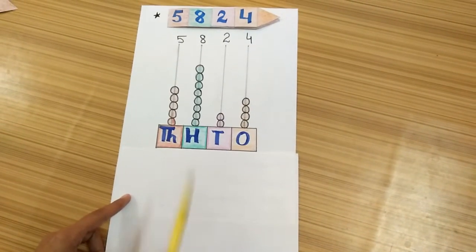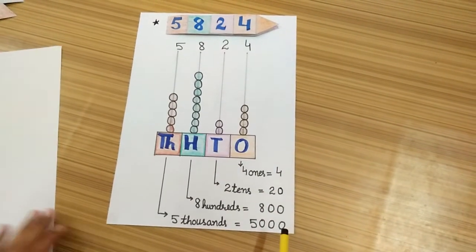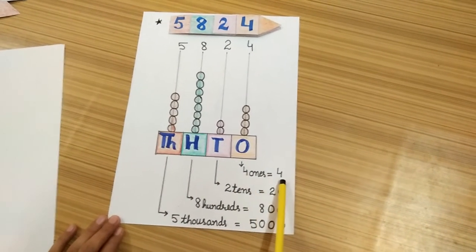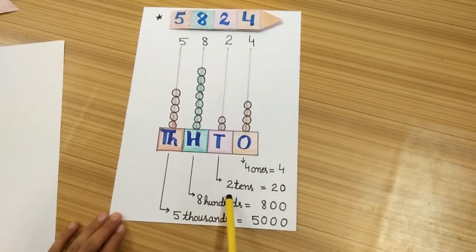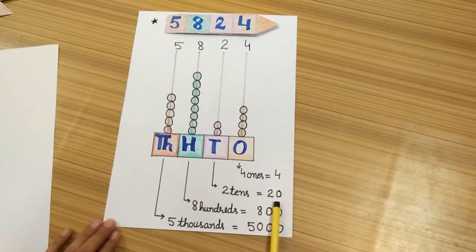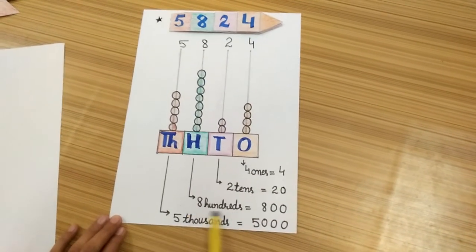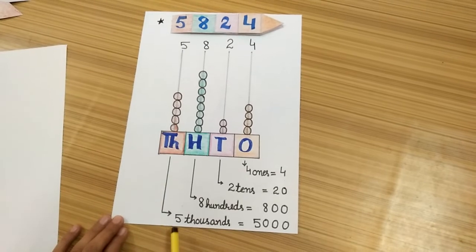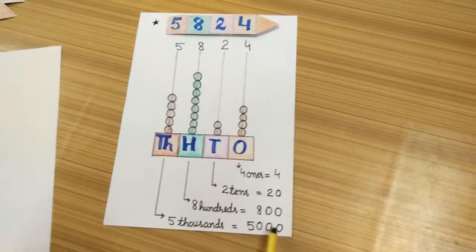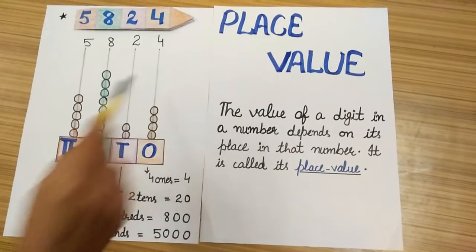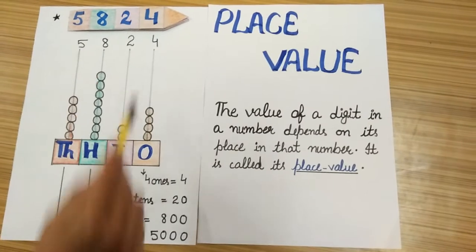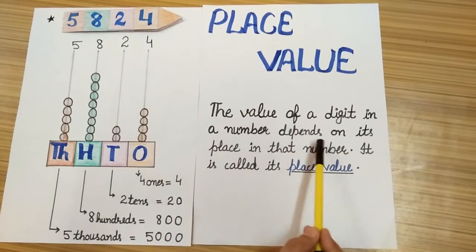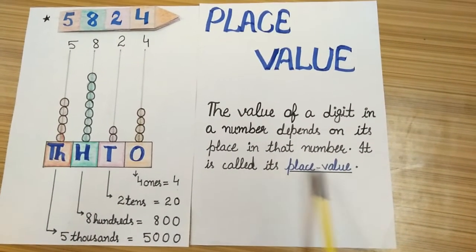You have seen that different digits at different places have different values. Like four at ones place — its value is four ones, meaning four. Two is at tens place, so its value is two tens, that is twenty. Eight is at hundreds place, so its value is eight hundreds, meaning eight hundred. And five is at thousands place, so its value is five thousand. The value of a digit in a number depends on its place in that number, and that is why it is called place value.